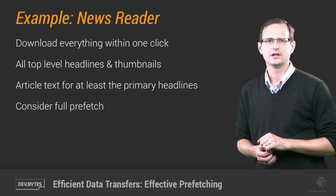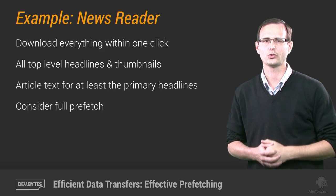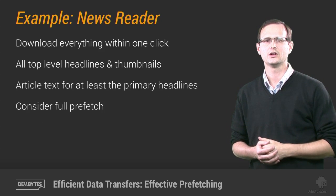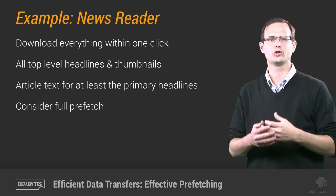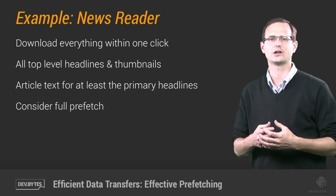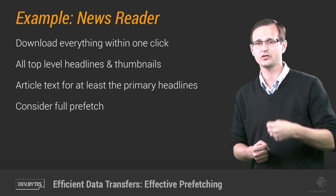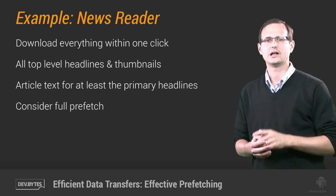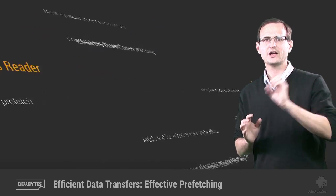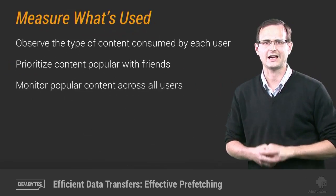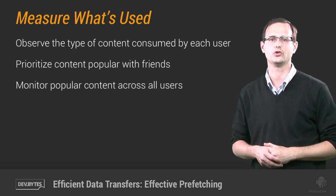The real trick is being able to accurately guess which articles each user is likely to read and prefetch only those. One approach is a breadth-first search, assuming that users are more likely to read articles near the current one. Or you can go depth-first and bank on them reading lots of articles on a given topic. A better approach is to use science — measure how your content is actually being consumed and use that to inform your decisions dynamically and on a per-user basis.